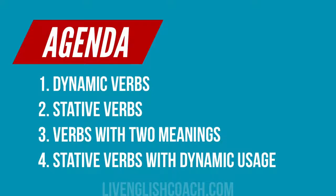Our lecture today consists of four parts. We'll talk about dynamic verbs — these are the verbs which express actions. The majority of verbs in English are dynamic. When we talk about actions, we mean actually actions, so we can clearly see that something is happening. We can picture the meaning, we can see the action happening. That's what dynamic verbs — action verbs — means.